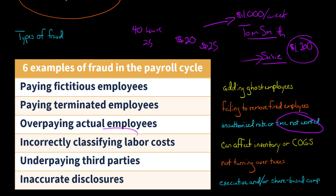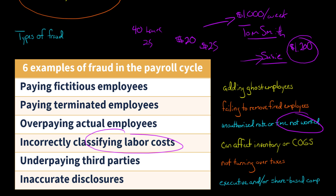Incorrect classification of labor costs is particularly an issue if you have a manufacturer and you're trying to figure out whether a cost is a product cost or a period cost. That affects whether the cost goes to inventory, because with a manufacturer, product costs first go to inventory and are then expensed through cost of goods sold when the inventory is sold. Period costs, on the other hand, are expensed when they're incurred. So if you incorrectly classify labor costs for a manufacturer, that could affect their inventory and their cost of goods sold.